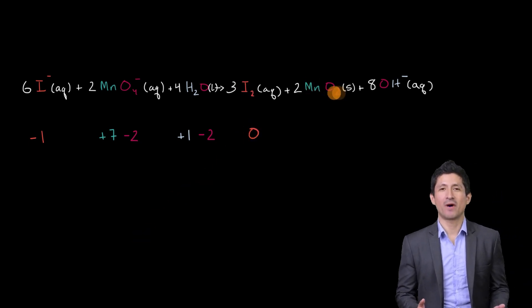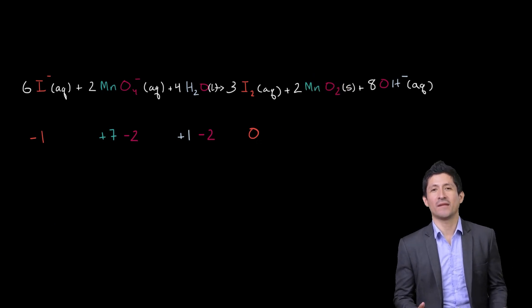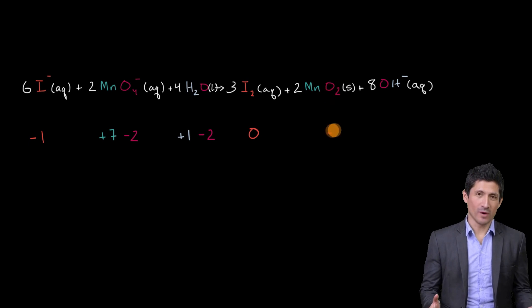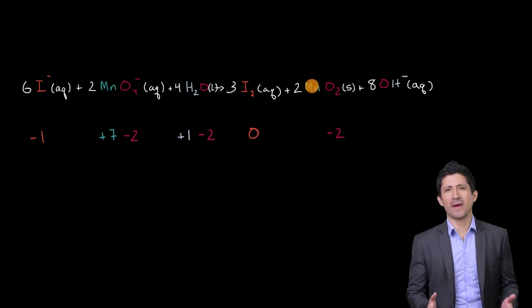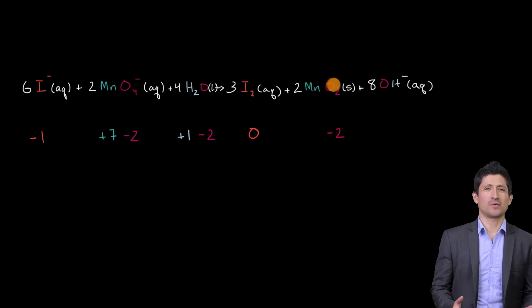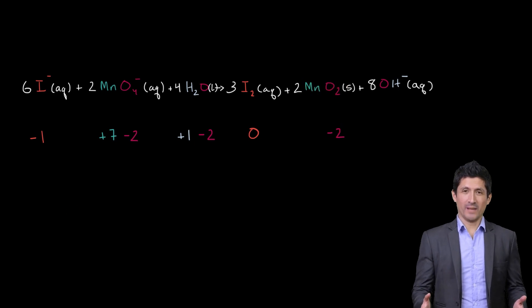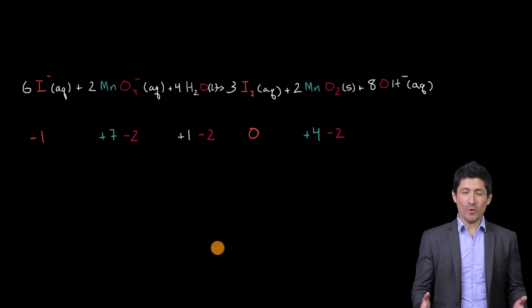Then let's move on to the next compound. Each of these oxygens has an oxidation number of negative two. So what would be manganese's oxidation number? The compound is neutral. Two oxygens at negative two gives negative four total. So in order to be neutral, manganese must be at plus four — an oxidation number of plus four.